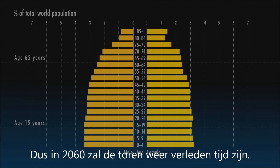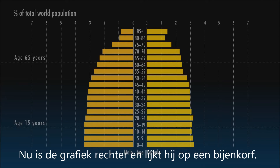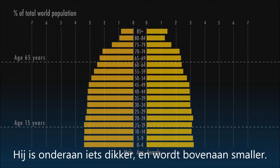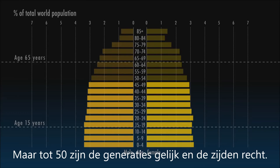So, by 2060, the Dome will have come and gone, and now the shape of the population looks more like a column, or perhaps an old-fashioned beehive. It's a little fatter near the bottom, and curves in at the top. But up to the age of about 50, the generations are of almost equal size, and the shape has vertical sides.